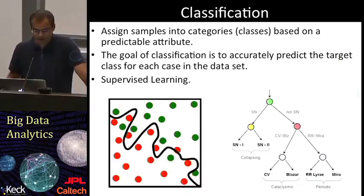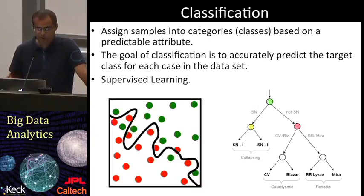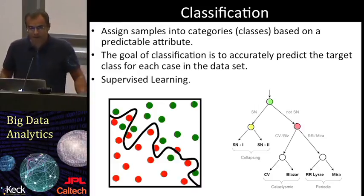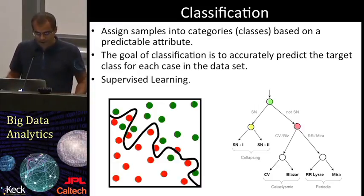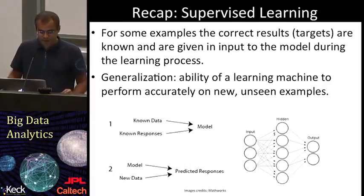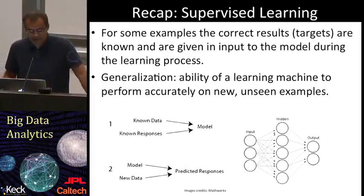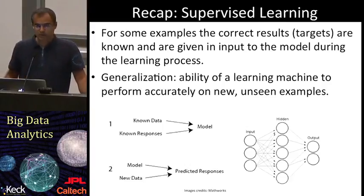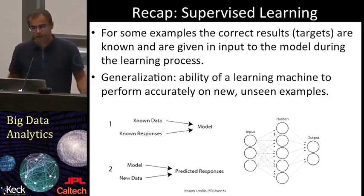Classification is one of the most popular data mining tasks. In a classification problem we want to divide our samples in classes and assign each new object to a given class. Because the class label of each training example is provided, the learning process is said to be supervised. We talk about supervised learning when for some examples the correct results are known and given as input to the model during the learning process. Ideally, the classifier will then be able to generalize — that means it will be able to determine the correct results also for unseen instances.